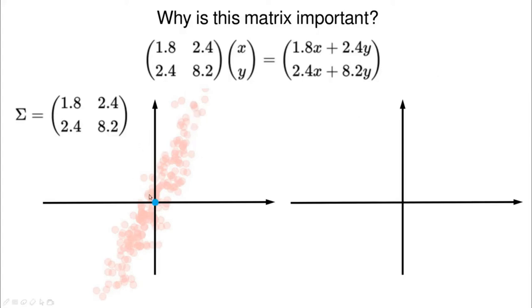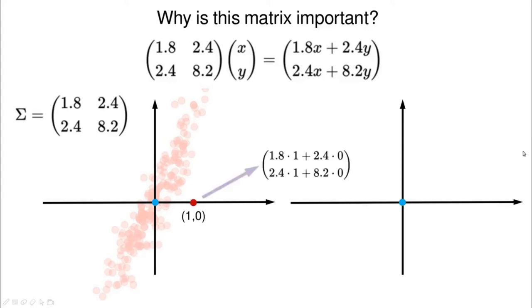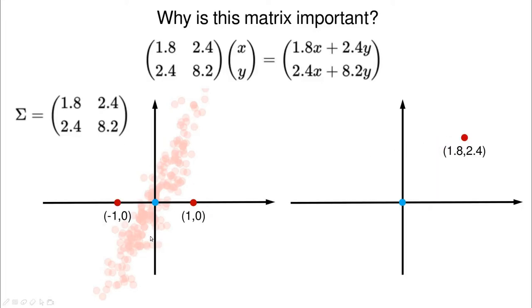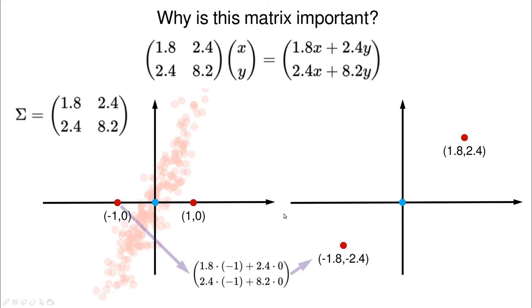Let's start with the simplest example: the origin. Since we subtracted the mean value of X and Y, plugging zero gives the same point — it remains in place. What about the point (1, 0)? We compute 1.8 times 1 plus 2.4 times 0, which gives 1.8, and similarly for the other coordinate. We find that point. Applying the matrix to another point sends it below that quadrant.